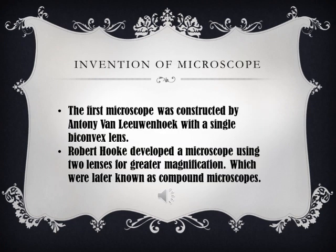Let's come to the next topic: the invention of the microscope. The first microscope was constructed by a Dutch scientist called Antoni van Leeuwenhoek. The microscope he constructed had a single bi-convex lens and was called the simple microscope. Antoni van Leeuwenhoek constructed nearly 400 microscopes — that is a great number.